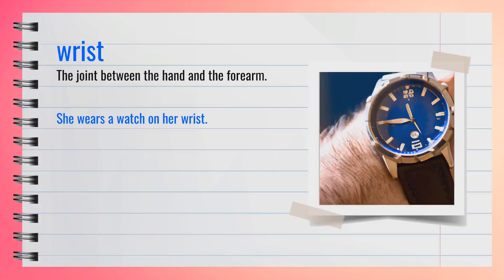The word wrist, spelled W-R-I-S-T, is the joint between the hand and the forearm. Synonyms include joint and carpus. For example, she wears a watch on her wrist. In summary, the wrist is the joint that connects the hand and forearm.